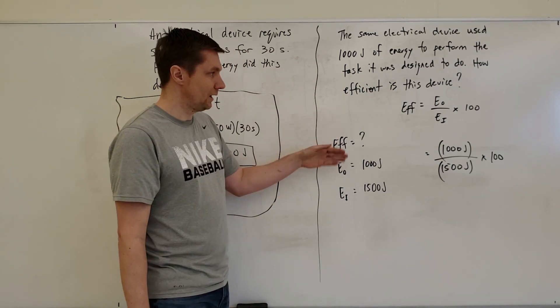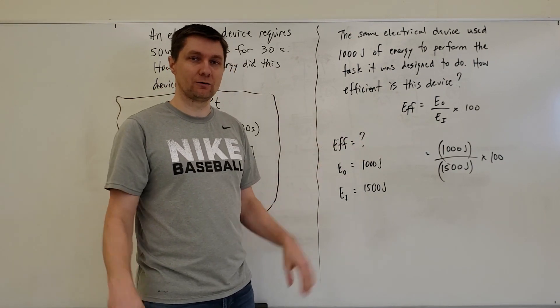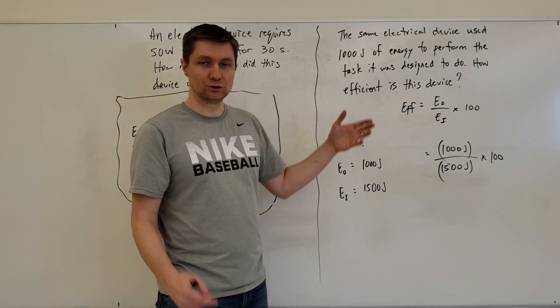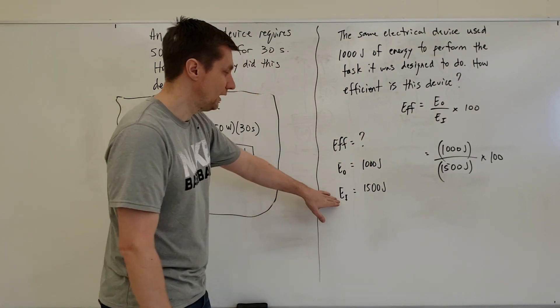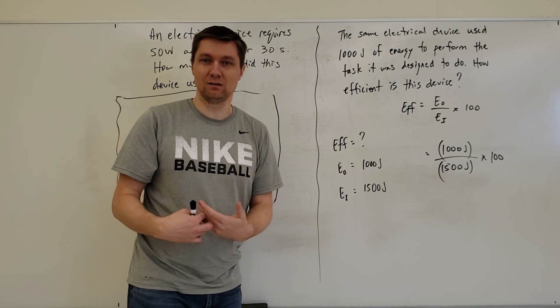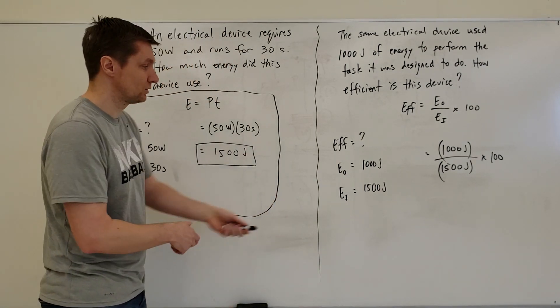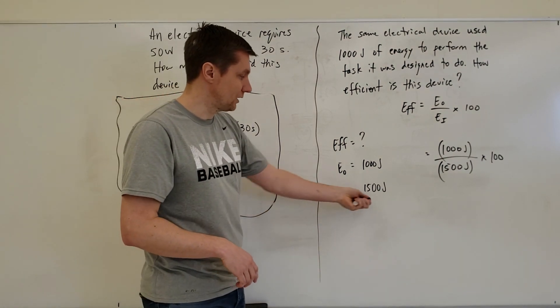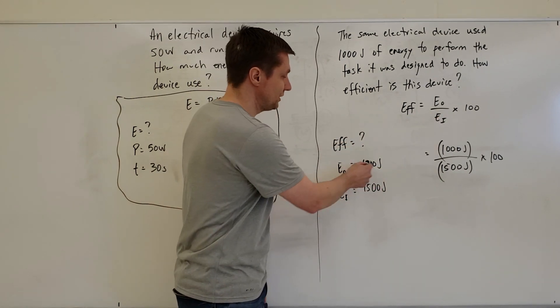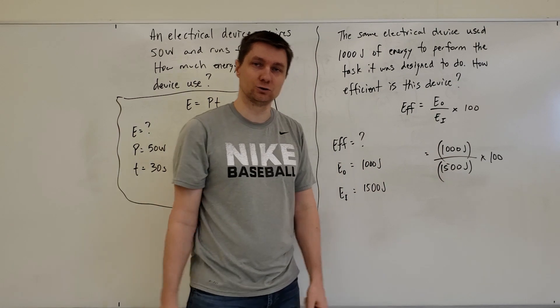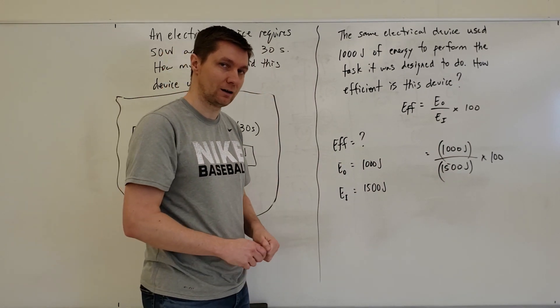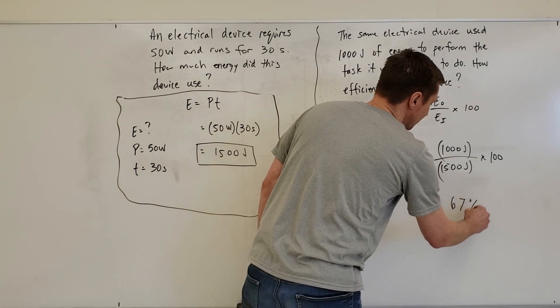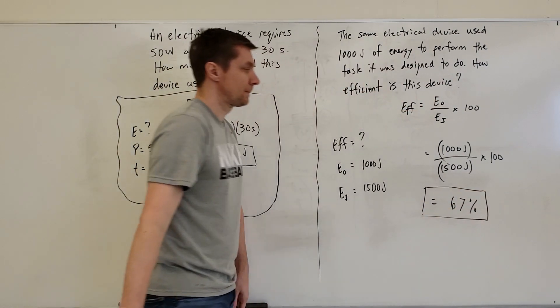Again, set it up where you're choosing the formula you're going to use. I'm calculating efficiency, so efficiency equals question mark. Energy out is how much energy was used to perform the useful task. Energy in was how much it took in from the electrical circuit. This number was calculated using the formula in the previous part. I plug that in: 1500. Energy out is 1000 joules, energy in 1500 joules. Multiply by 100 to get the percentage, which comes out as 67%. There's my answer.